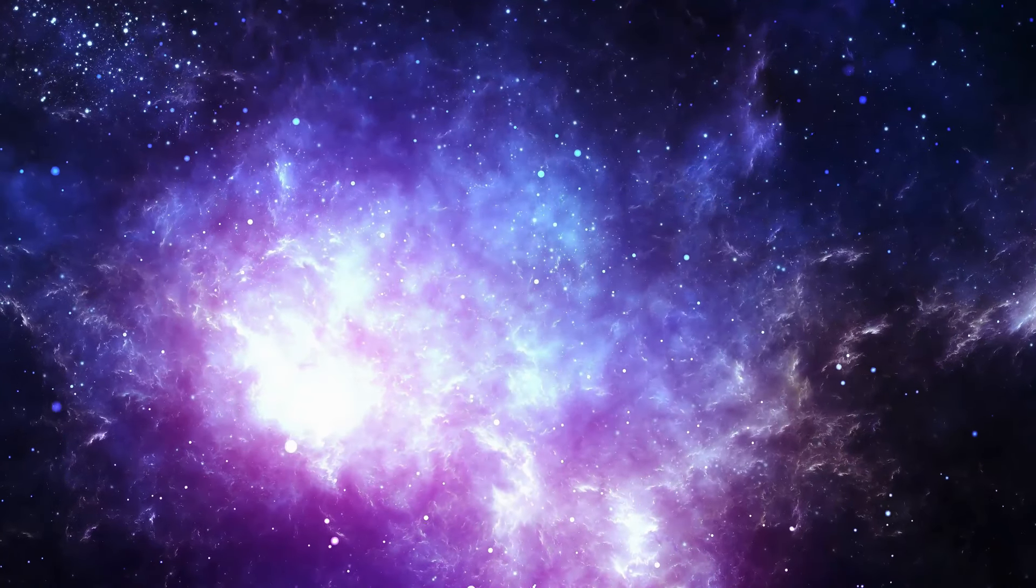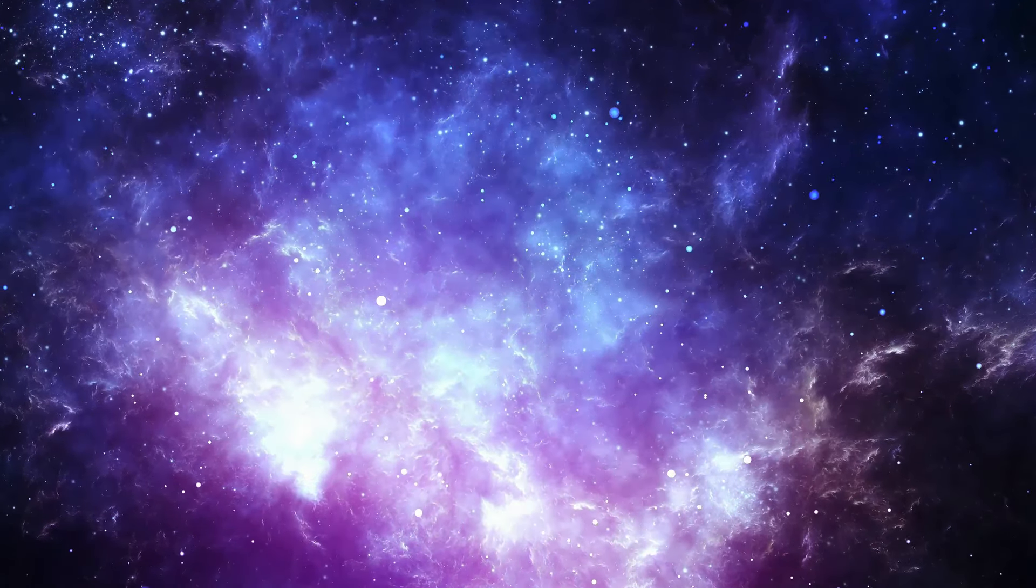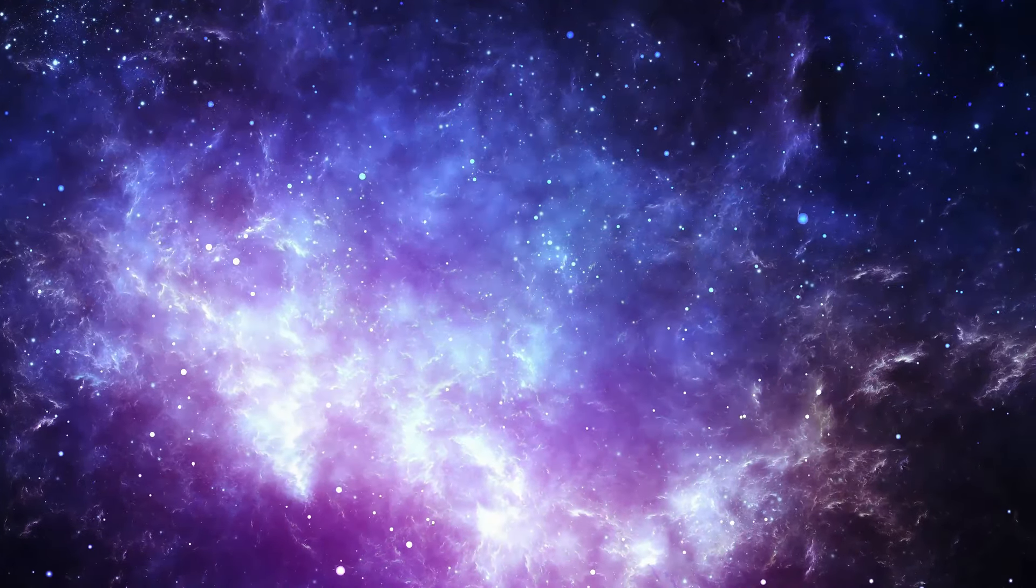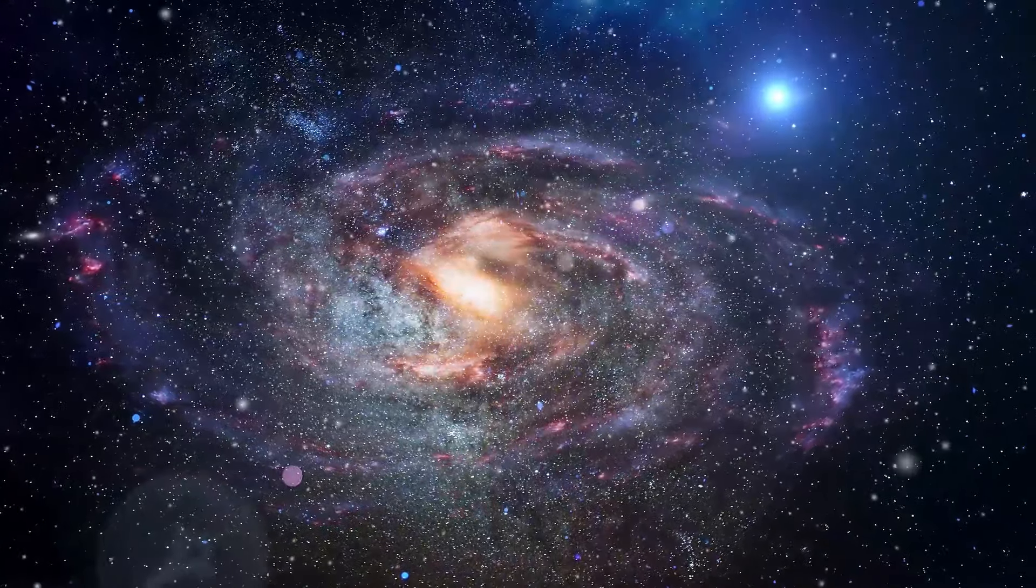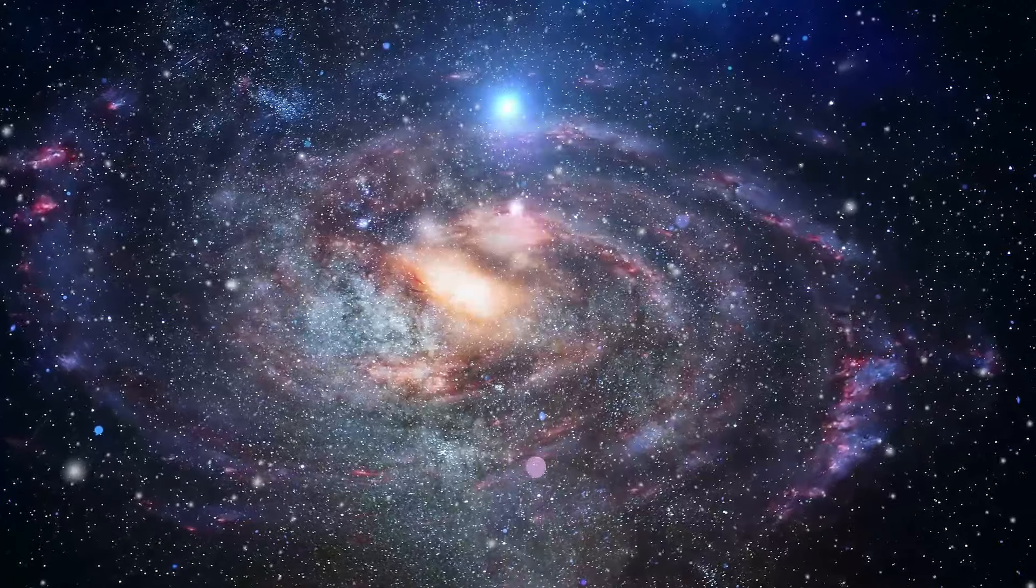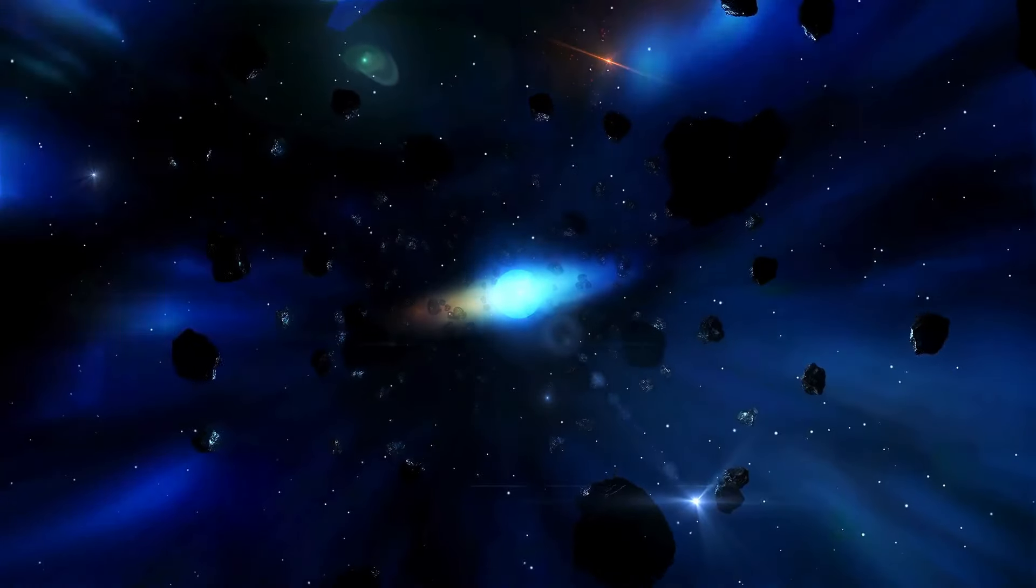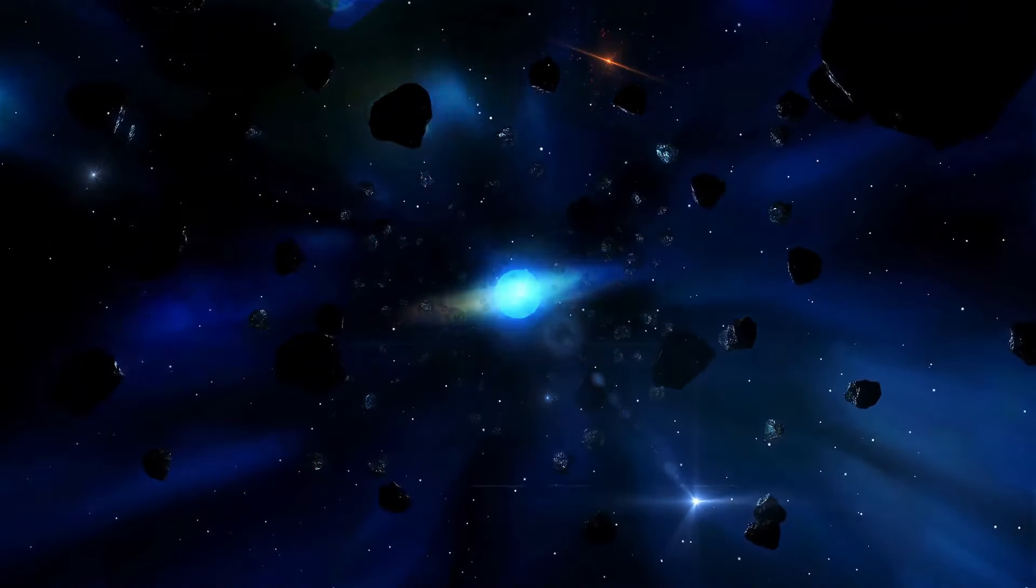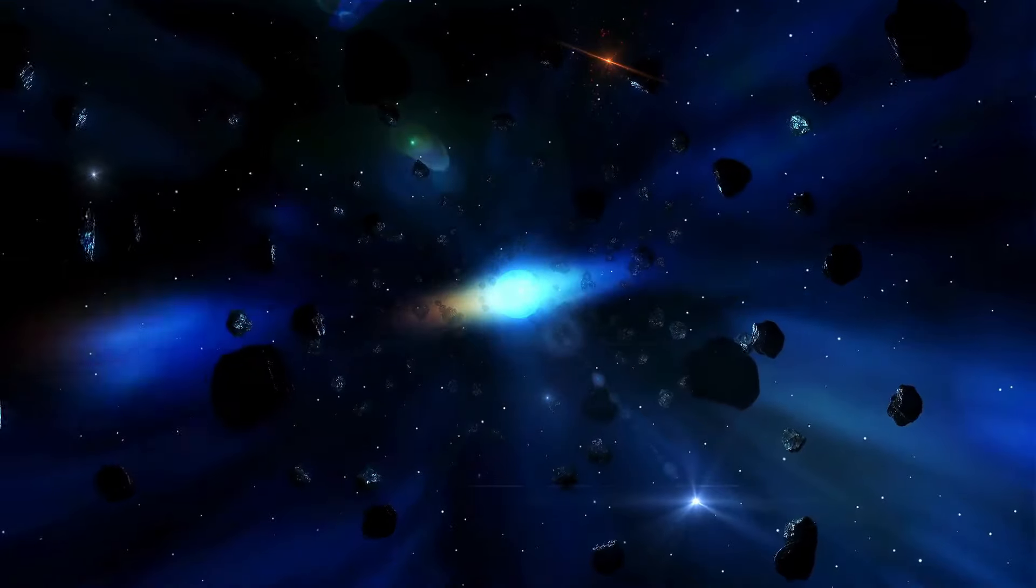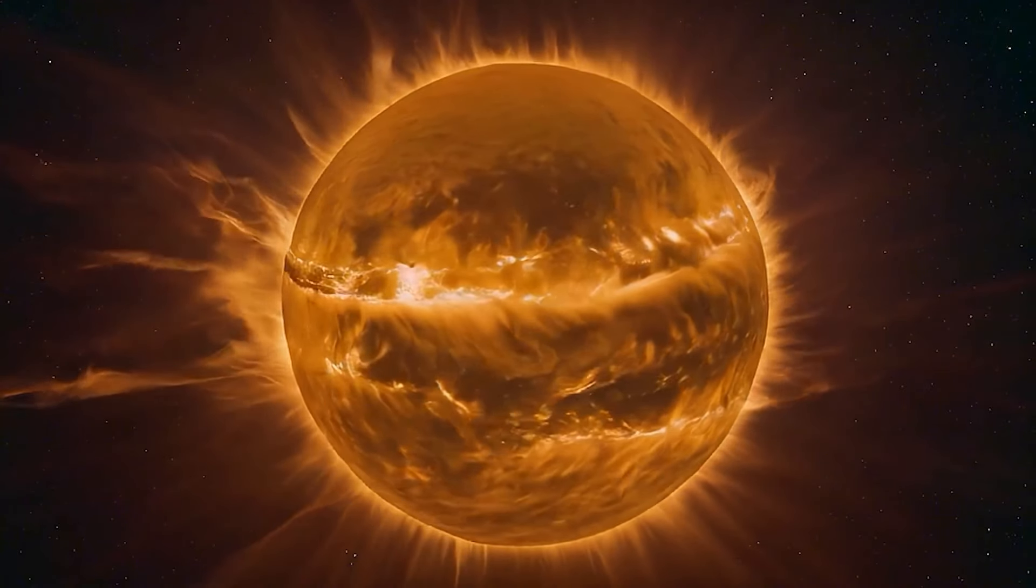The potential for Betelgeuse to become a supernova also intersects with our understanding of cosmic events on a larger scale. For example, the study of supernovae helps astronomers categorize the conditions leading to different types of explosions, such as type I and type II supernovae. Type I supernovae are typically the result of nuclear explosions in binary star systems, while type II supernovae, like those expected from Betelgeuse, result from core collapse in massive stars. Understanding the differences between these events can help researchers unravel the history of our galaxy and the frequency of such occurrences.